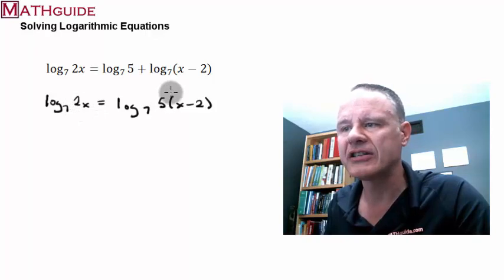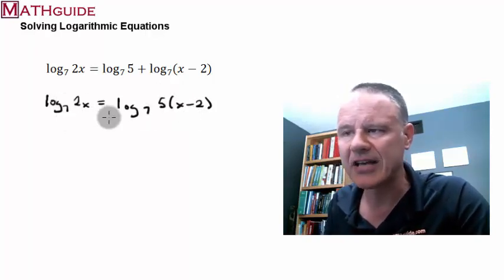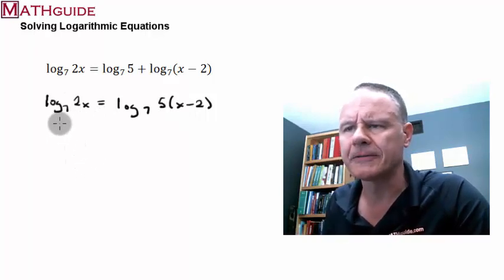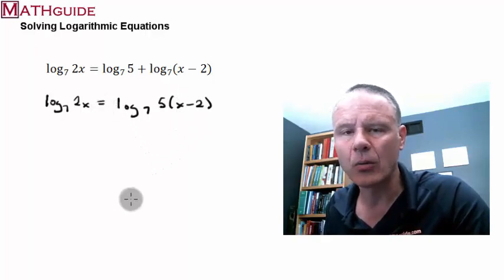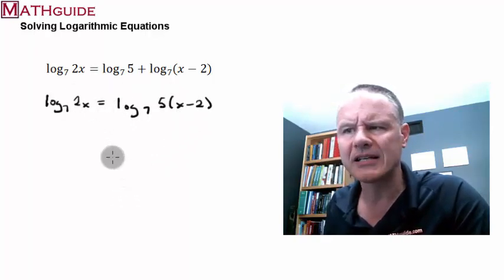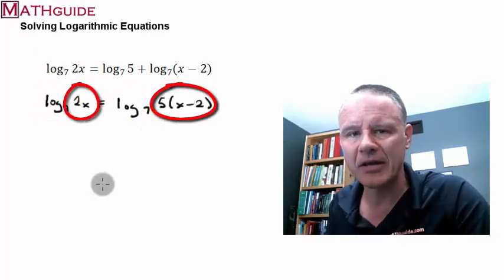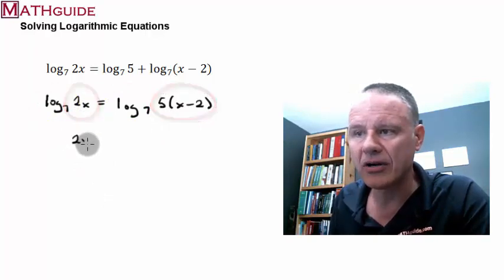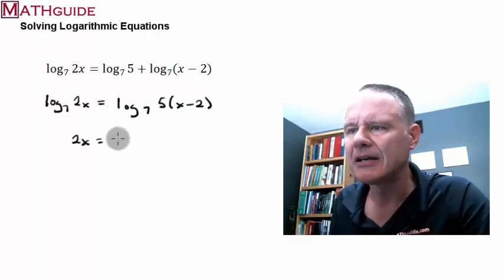Moving forward, you're going to see that I have logs on both sides, same base. So I've got a log on the right side, log on the left side, same base. Now, let's just think about this. If I'm taking the log base 7 of something here on the left side, I'm taking the log base 7 of something here on the right side, and the two quantities are equal. Well, the only way these two quantities could be equal, if I'm taking the same logarithm with the same base, is that the two arguments have to be equal. Well, so I am now going to say that the 2x has got to be equal to 5 times the quantity x minus 2.